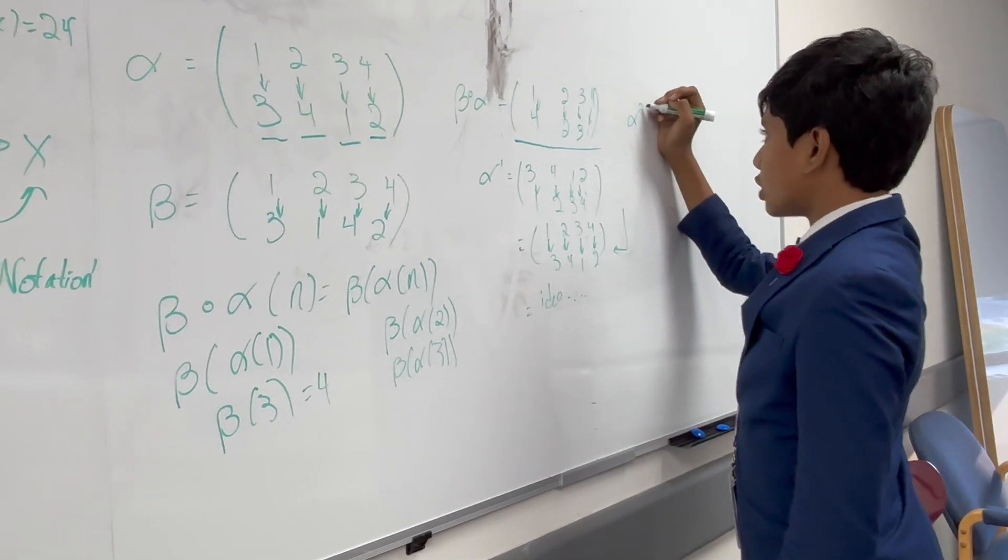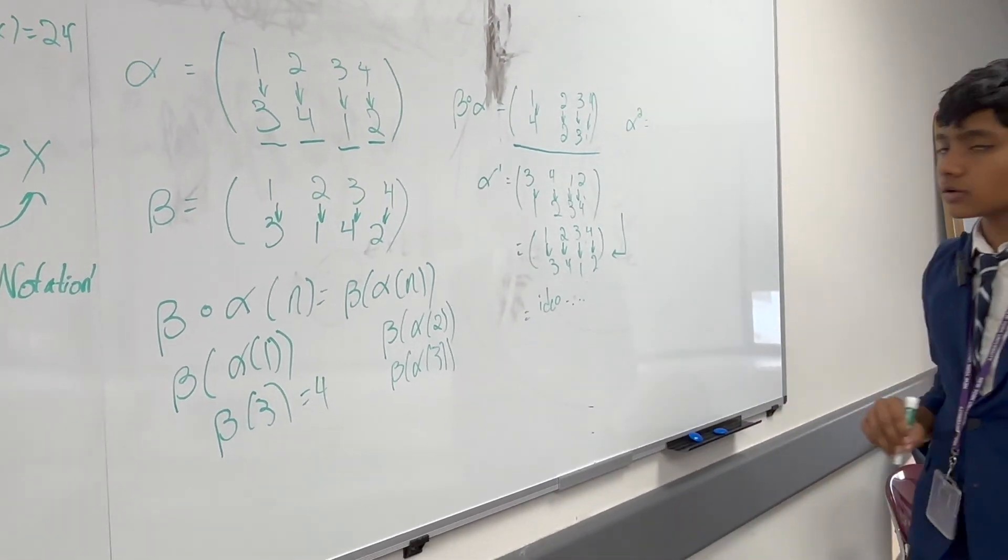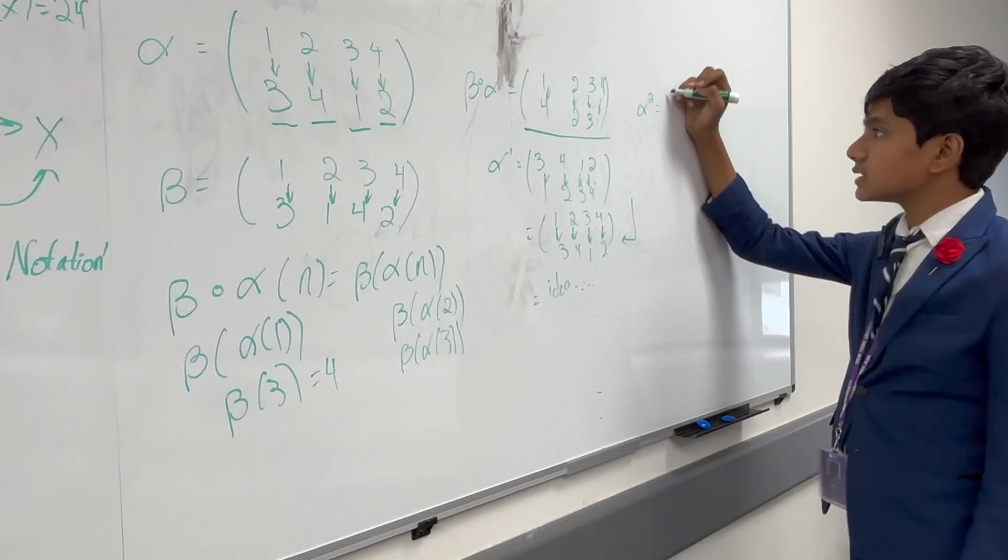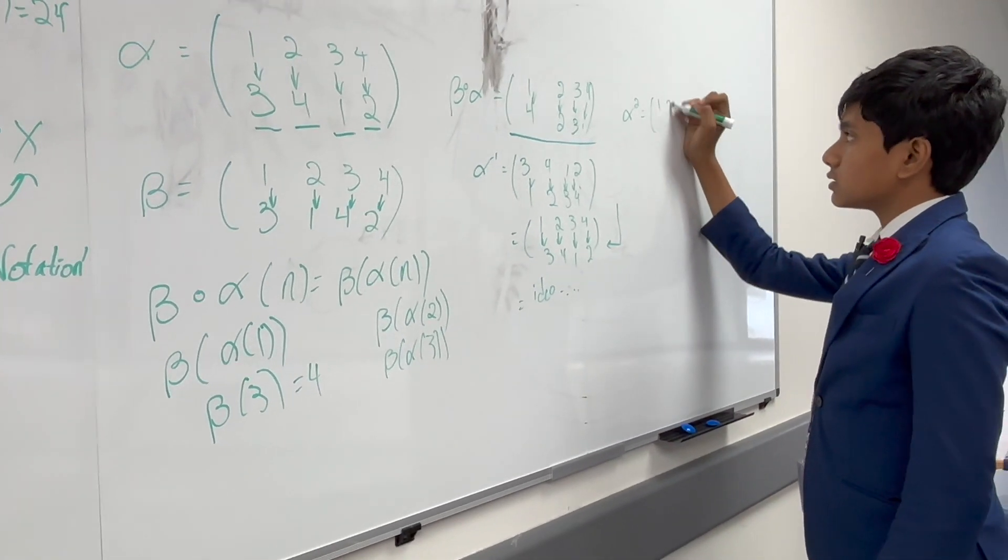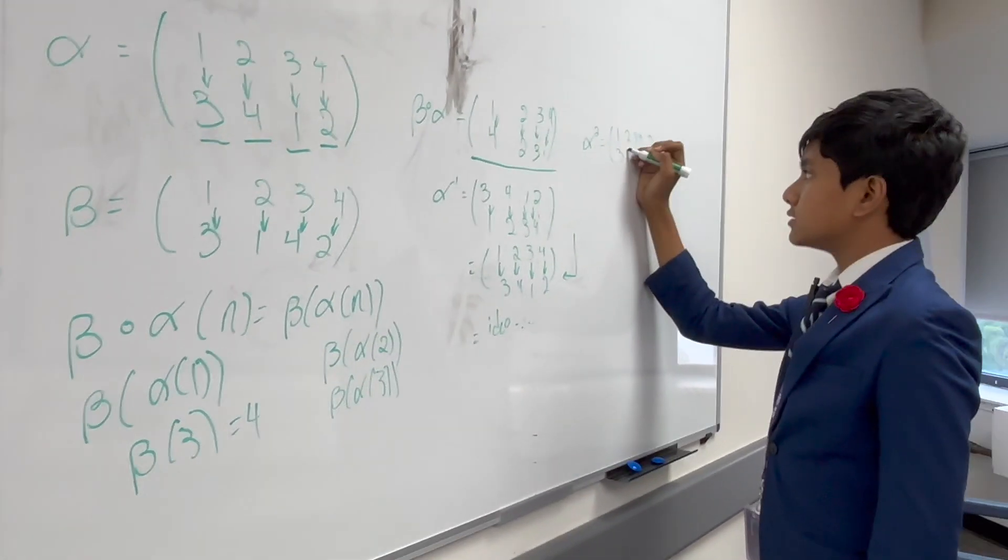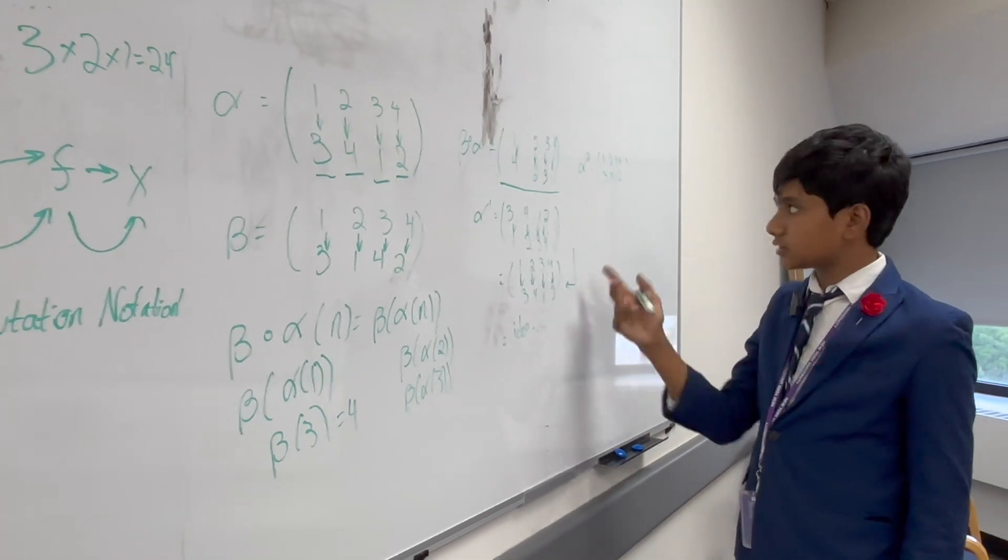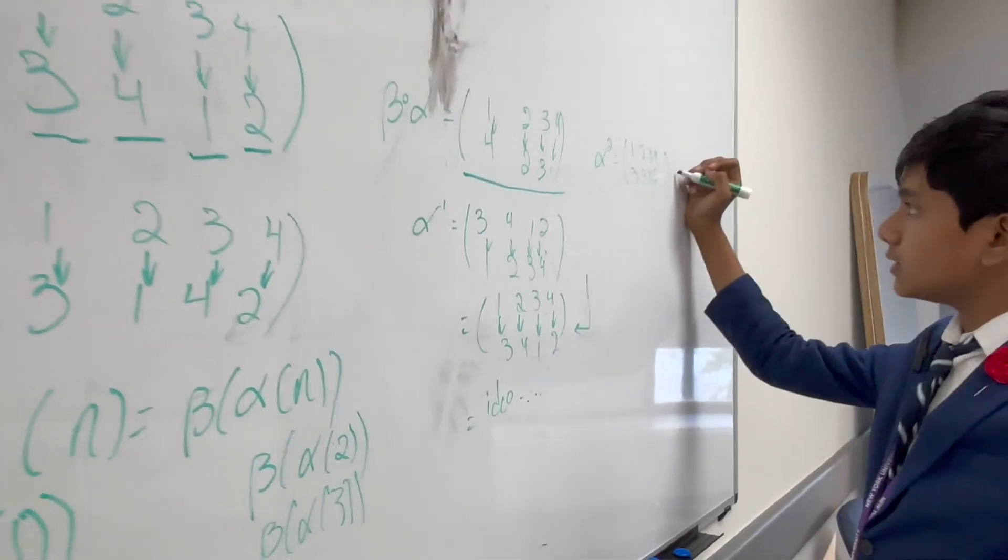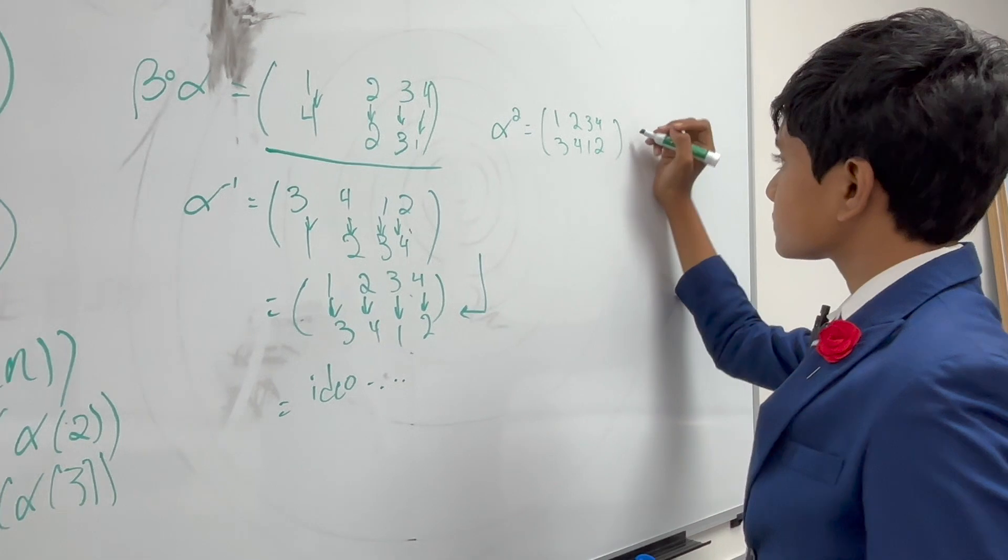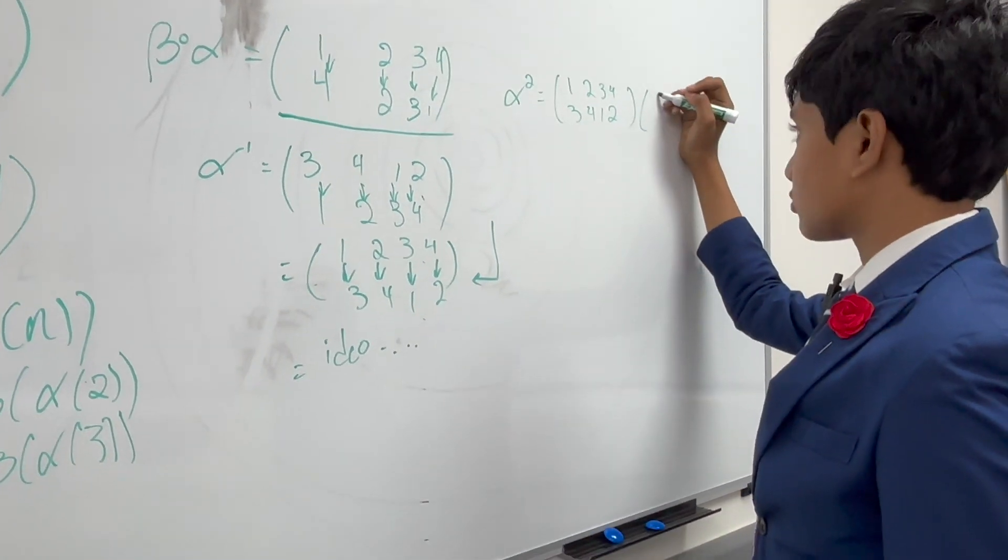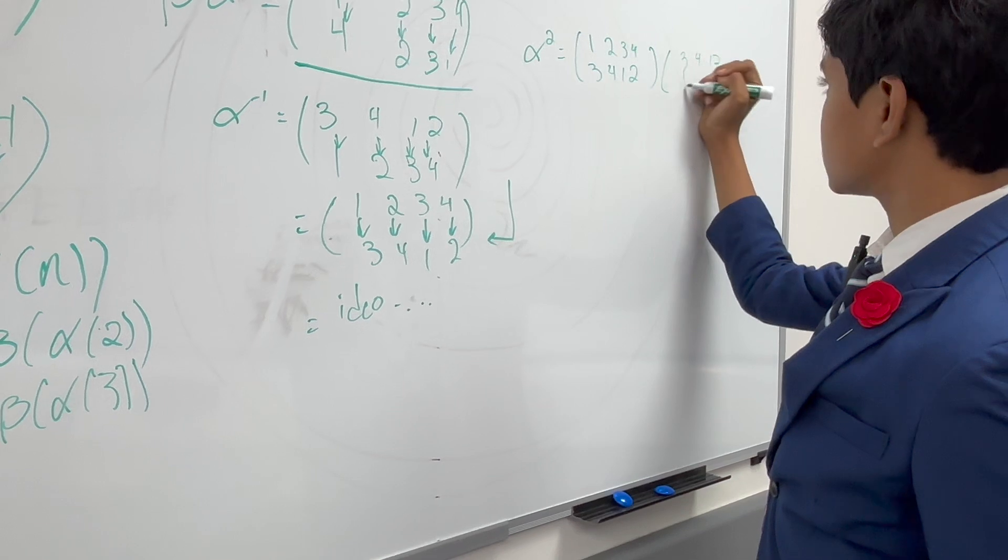And, one last thing, there's also alpha squared, which, as you can guess, is just going to be the original mapping arranged twice. Which, as we've just shown, is just going to be the identity. And so, it's like we're kind of multiplying these, in some sense.